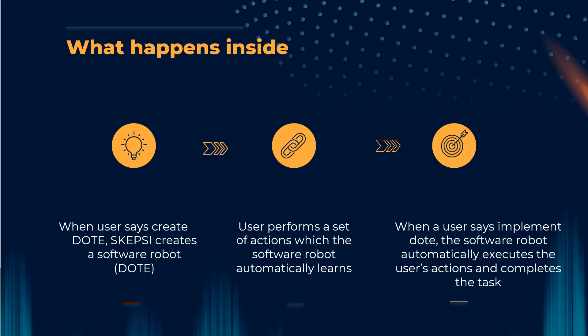Let's see what happens inside Skepsi when a user says create dot. At first, Skepsi creates a software robot known as dot. This software robot then automatically learns whatever actions or steps the user takes to complete the task. And when the user says implement dot, the software robot then automatically executes the user actions and completes the task all by itself.